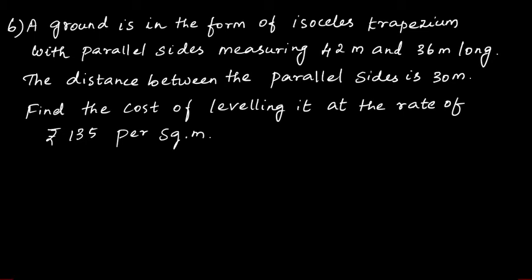They have given the parallel side values as 42 meter and 36 meter, which are the A and B values, and the distance between the parallel sides is 30 meter, which is the height value. First write what is given: A value is 42 meter, B value is 36 meter, and height value is 30 meter. Substitute all this in the area formula and find area.